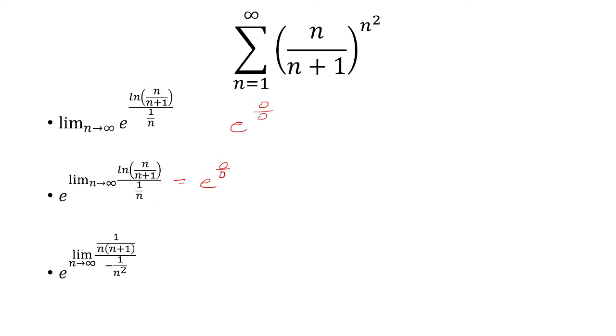So if we take the derivative of natural log of n over n plus 1, we do get 1 over n times n plus 1. Now I want to show you a very nice way to take the derivative of that. First, I'm just going to use algebra and just rewrite this as natural log of n minus natural log of n plus 1. So this is just a property of natural logs.